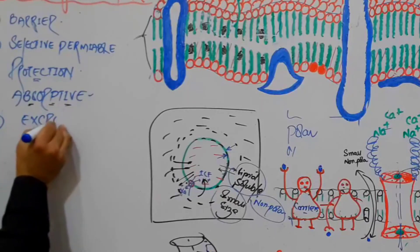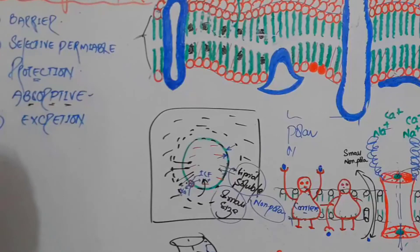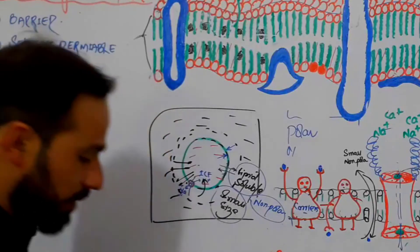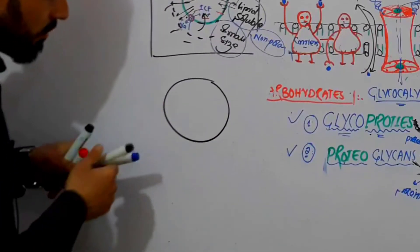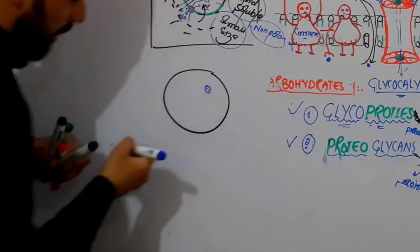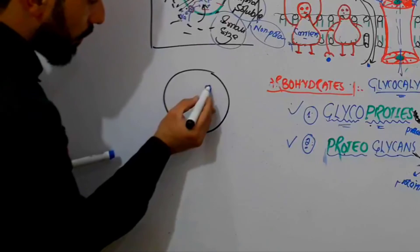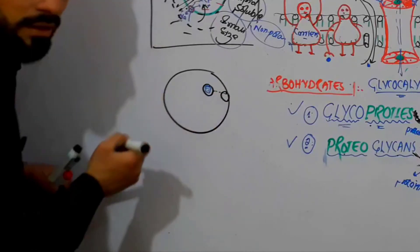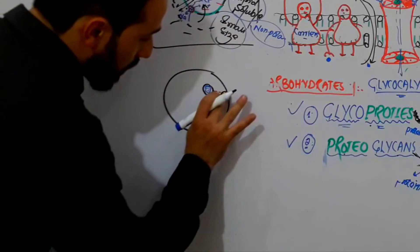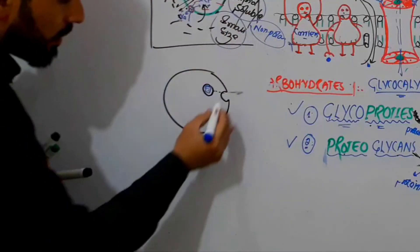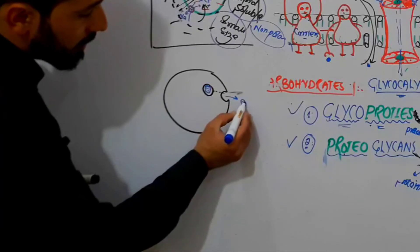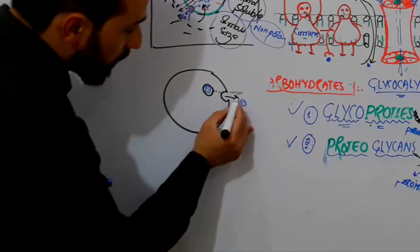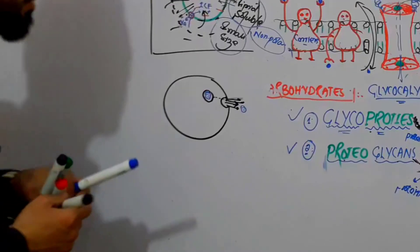The next function of the cell membrane is excretion. The cell membrane is also used to excrete certain substances out of the cell — this is called exocytosis. For example, if there is a dangerous substance inside the cell, it is first enclosed in a vesicle, and then the vesicle comes and binds with the membrane. The cell membrane allows the vesicle to expel that dangerous substance out of the cell. This is the excretory function of the cell membrane.